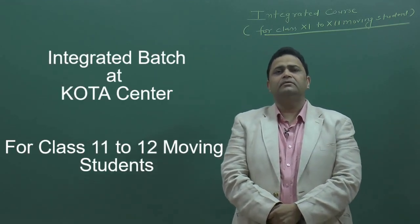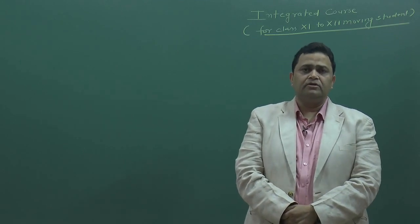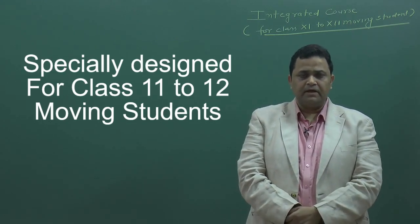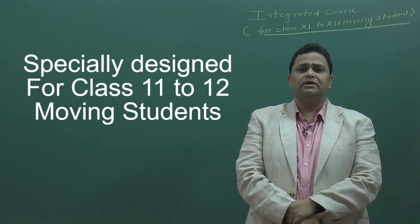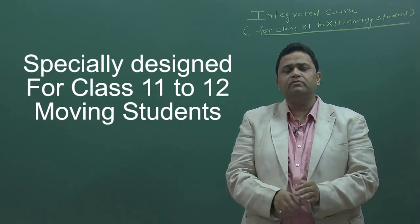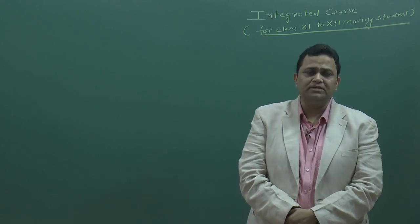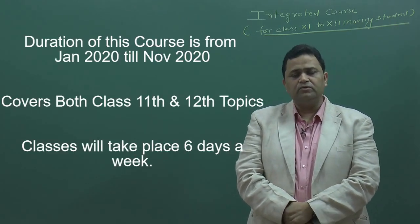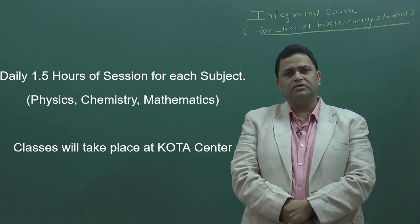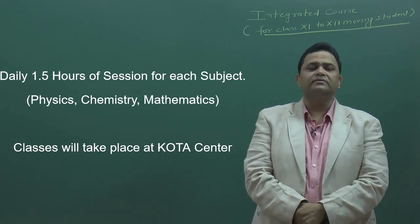Now I want to tell you about the Nucleon Kota integrated course. This course is for class 11 to 12. It is designed for two types of children: those who have not had coaching in class 11, and those who have not had coaching at all. We will start from the basics of class 11 and 12. There will be six days of weekly classes with daily Physics, Chemistry, and Mathematics. Each class duration is 1 hour 30 minutes.